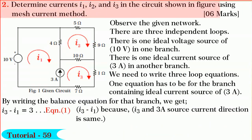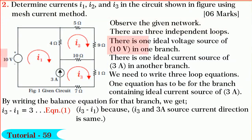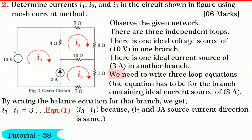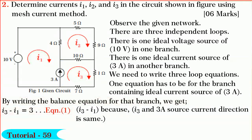Next we shall solve Question 2. In this question, we are required to determine i1, i2, and i3 in the network shown in figure. Observe the given network. There is one ideal source of 10 volts in one branch, and one ideal current source of 3 amperes in the other branch. We need to write three balance equations, of which one equation has to be for the branch containing the ideal current source of 3 amperes. By writing the balance equation for that branch, we get i3 minus i1 is equal to 3, because i3 and the 3-ampere source current direction are the same.